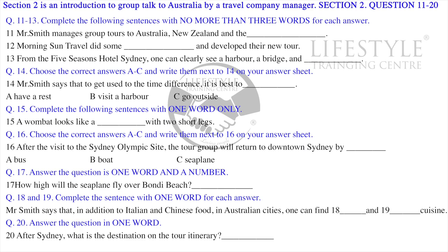Our first stop will be Sydney. It's one of my favourite cities, and we'll arrive mid-morning and check into one of my favourite hotels, the Five Seasons Hotel, Sydney. America's most popular travel magazine selected it as the best hotel in Australia. Believe me, it deserves every one of its five stars. It has fantastic views of Sydney Harbour, the famous Opera House and Sydney Harbour Bridge. And for those who were born to shop, it's just a short walk from Sydney's major shopping and business districts, great restaurants and bars. For those who like to keep fit, there's a state-of-the-art spa and fitness centre with sauna and heated outdoor pool.